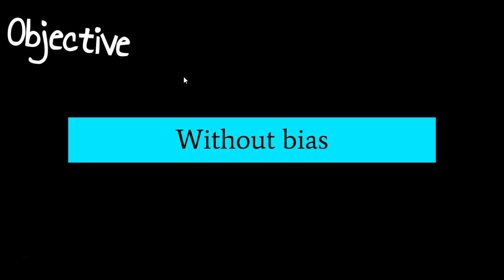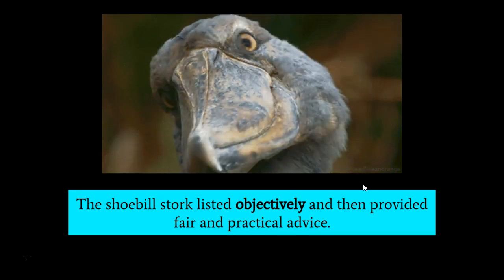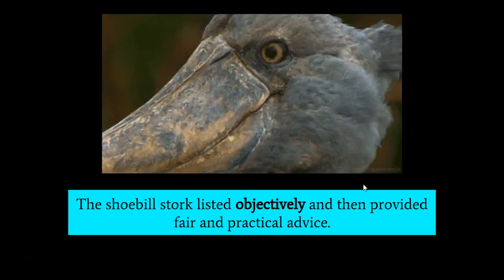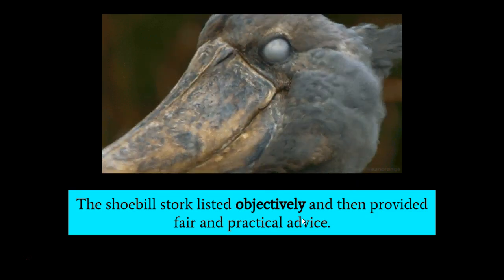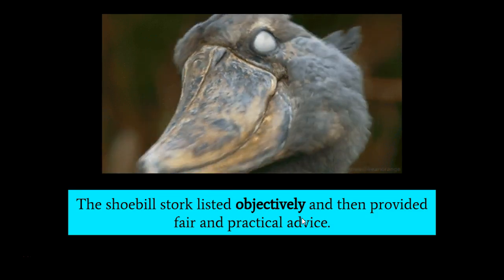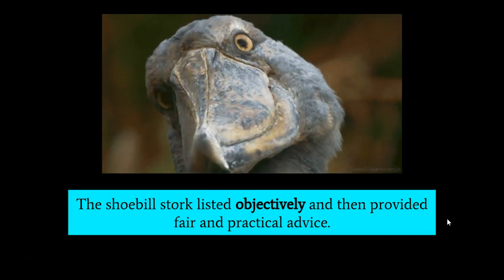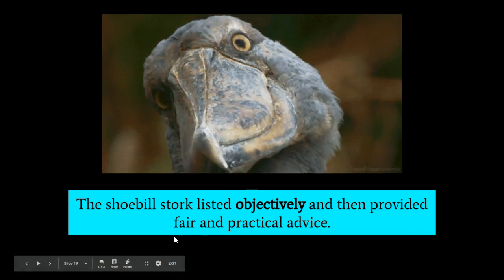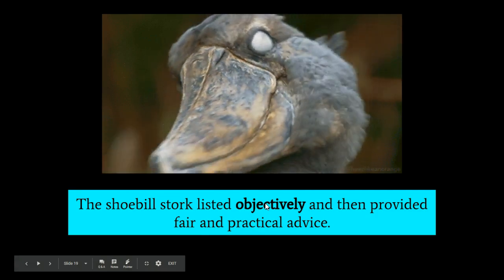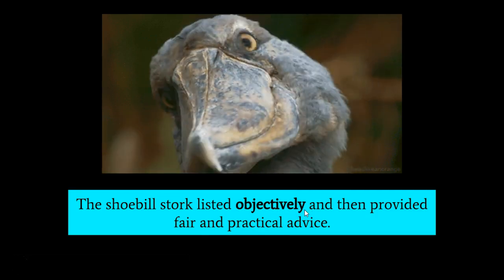For our next word, we have objective, which is kind of the opposite of subjective. Being objective has connections with being non-biased, while subjective has connections with being biased. Therefore, objective — without bias — has very positive connotations in our culture. When we hear our news or presentations, we want them to be objective, meaning led by logic rather than biases. In the sentence: the shoebilled stork listened objectively and then provided fair and practical advice. This is a good example of when an adjective has been changed into an adverb by adding -ly.